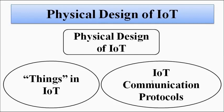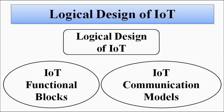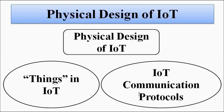So the physical design covers: defining which appliances, devices, or machinery are involved, and governing data exchange through rules and standards. Next is the logical design, which involves two things. First are the functional blocks — since IoT is used for a variety of purposes such as data sharing, sensing, actuation, monitoring, and controlling, those purposes are governed by functional blocks. Second are the communication models, which are related to but different from communication protocols.